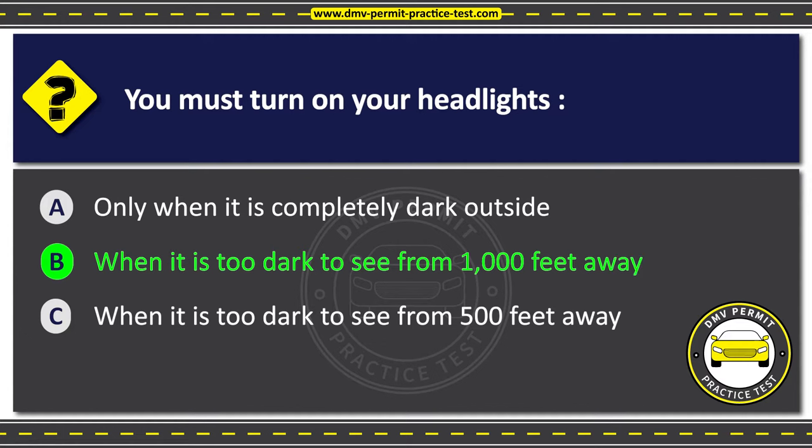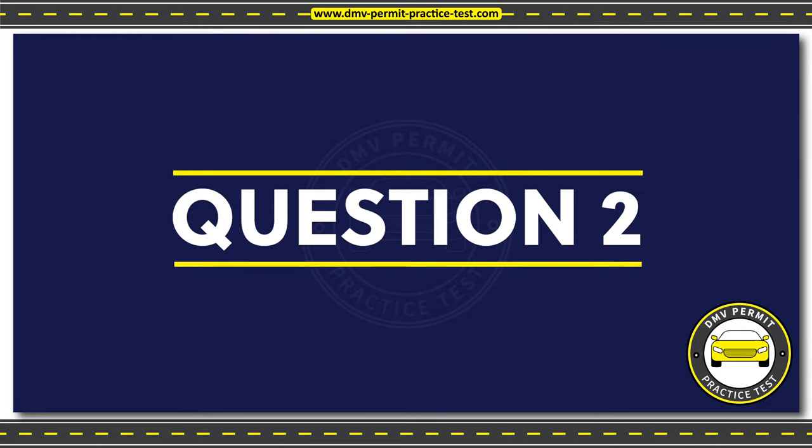The correct answer is Option B: When it is too dark to see from 1,000 feet away. Using headlights when you cannot see 1,000 feet away can improve your visibility, alert other drivers of your presence, and ensure that you are in compliance with legal requirements. Always use headlights in low-light conditions to ensure your safety and the safety of others on the road.